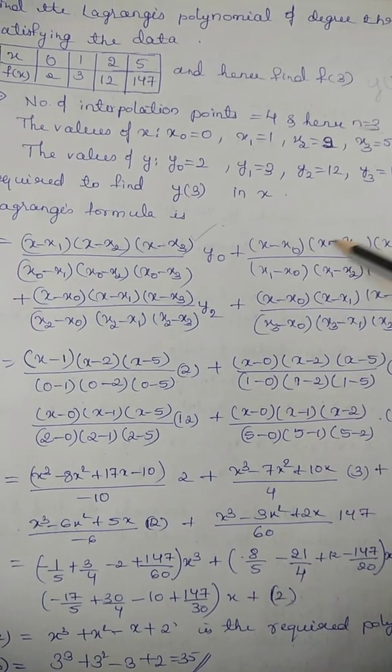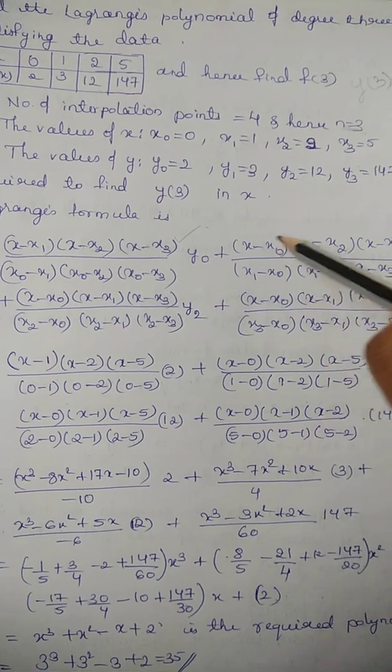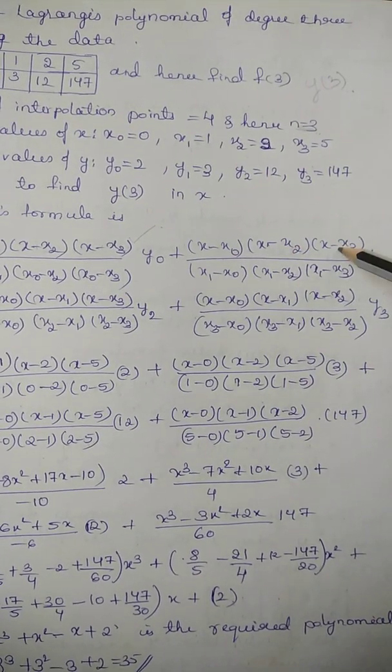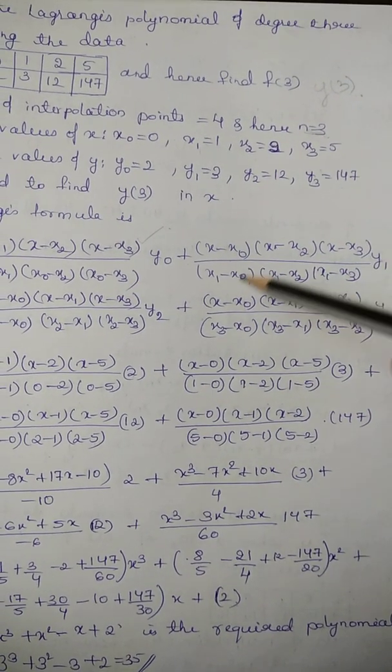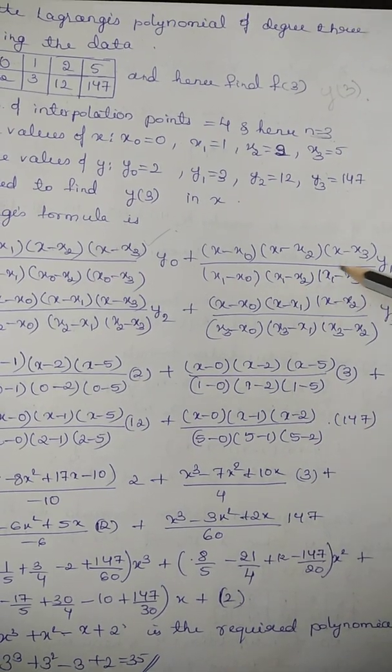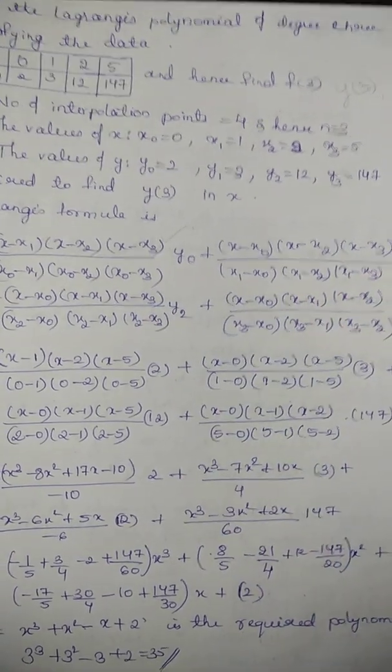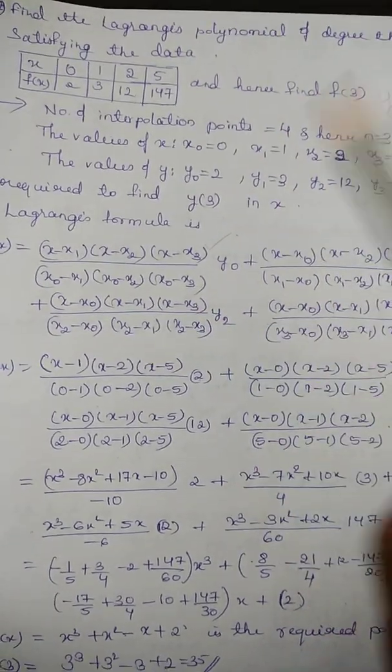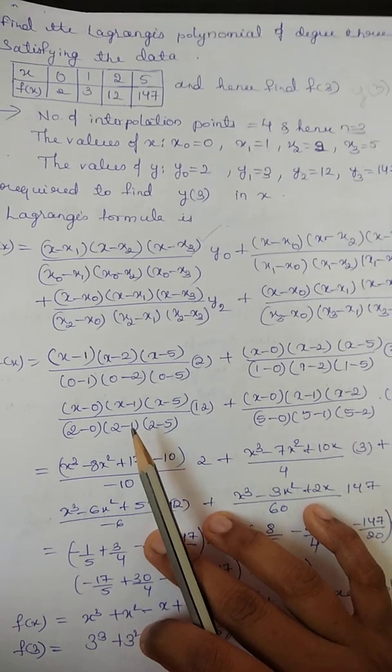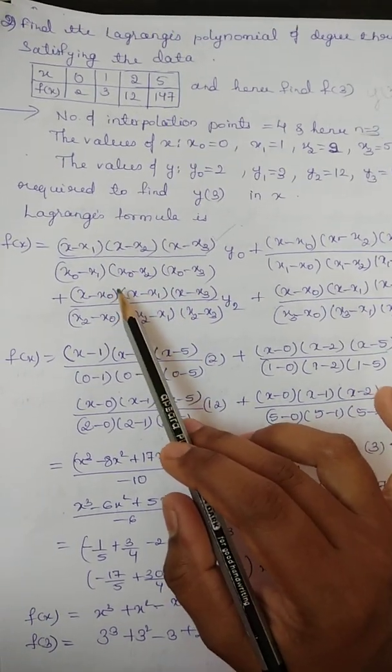Plus, here x1 will not come. x minus x0, x minus x2, x minus x3 into y1 upon x1 minus x0, x1 minus x2, x1 minus x3. How many terms will we get? Data points are 4. Now, let us go on substituting.